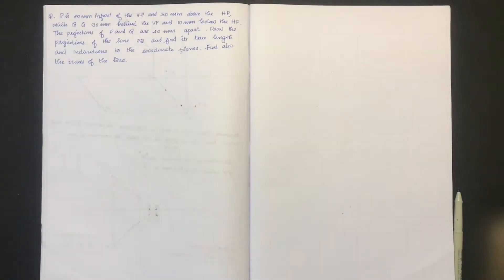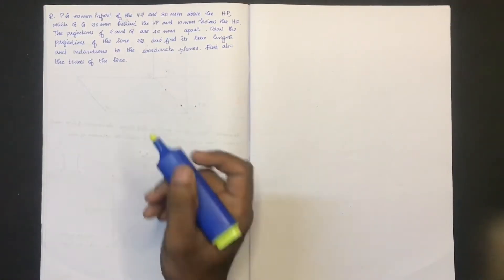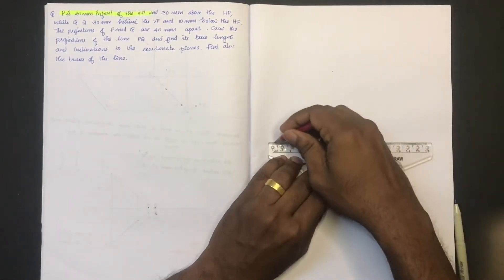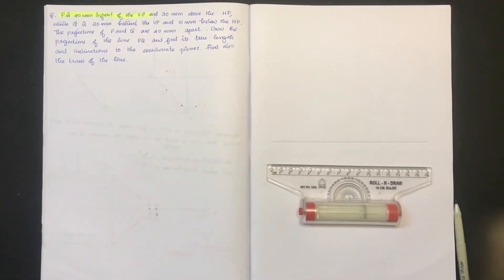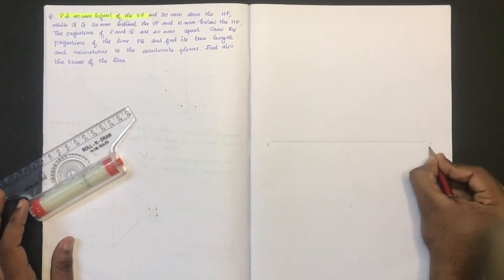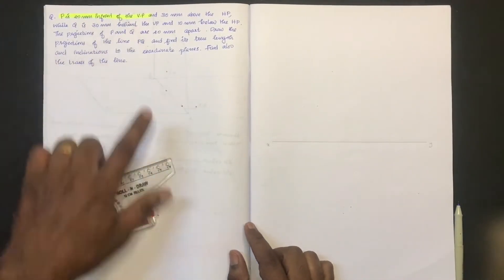We have a problem with the projection of a line. Point P is 20mm in front of VP. We have an XY line and a color line in front of VP. Next, point P is 20mm in front of VP.